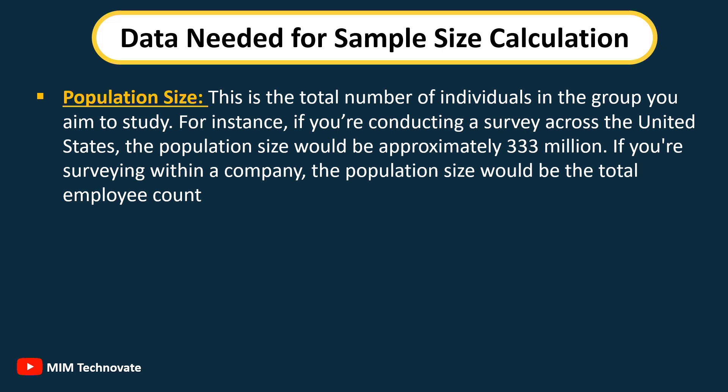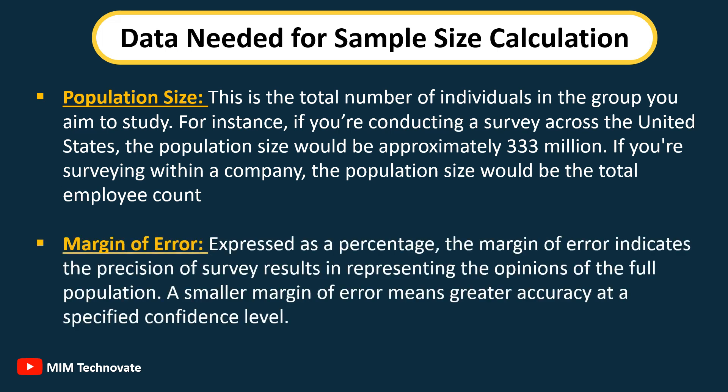If you're surveying within a company, the population size would be the total employee count. Margin of error: expressed as a percentage, the margin of error indicates the precision of survey results in representing the opinions of the full population. A smaller margin of error means greater accuracy at a specified confidence level.